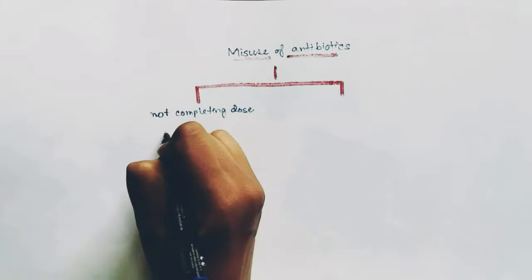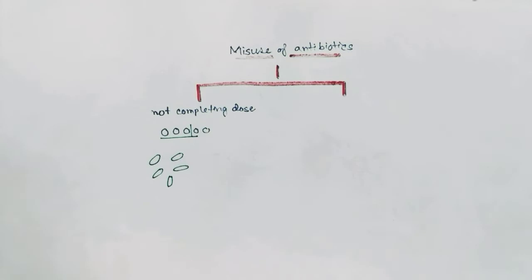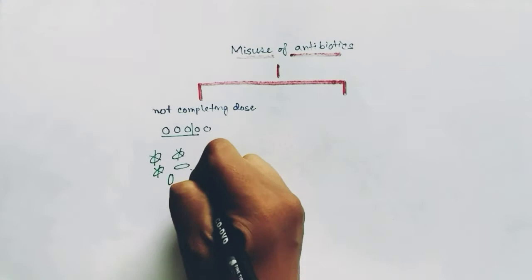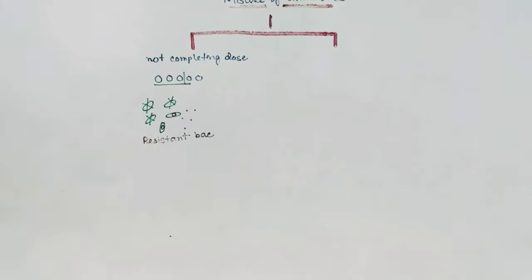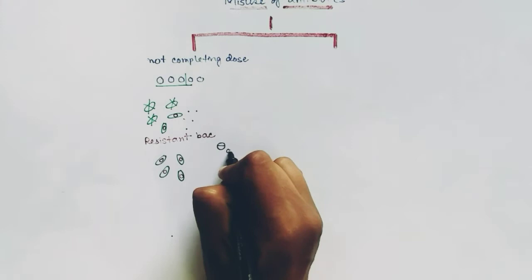Let's see what happens when we do not complete the dose. Suppose the doctor has prescribed you five antibiotics but you have taken only three. It has killed some of the bacteria but not all of them yet. The amount of antibiotic present is not adequate to kill all the bacteria, so these leftover bacteria will become resistant to that antibiotic.